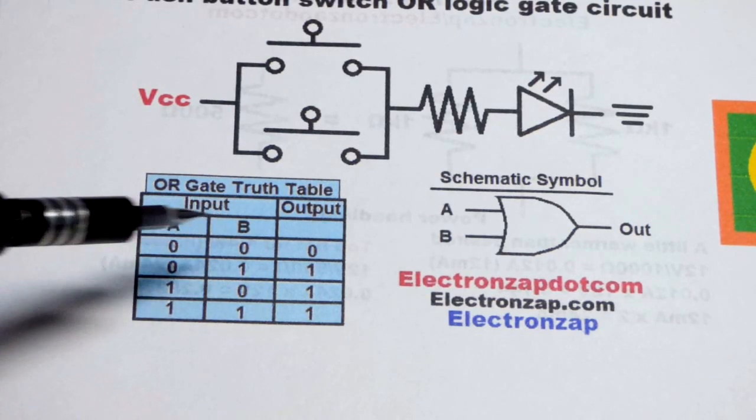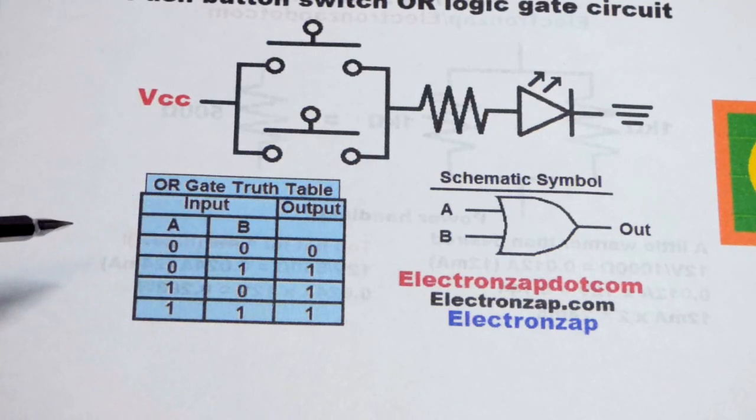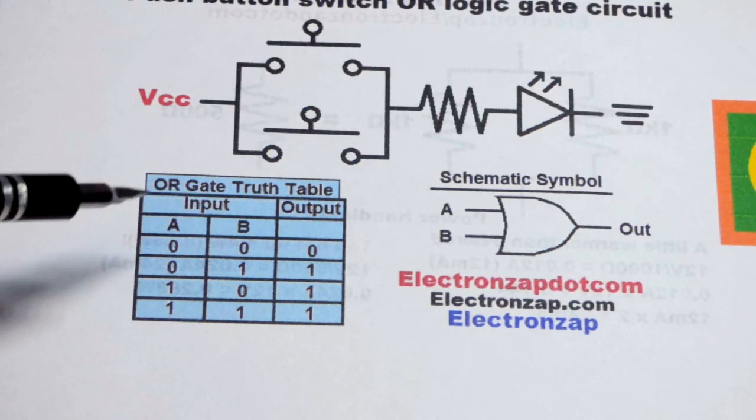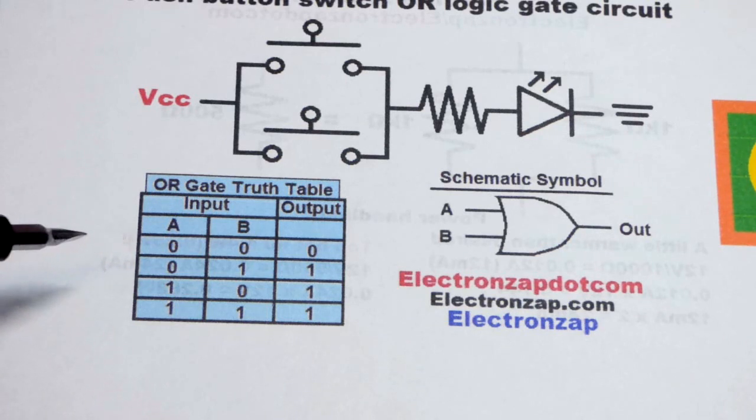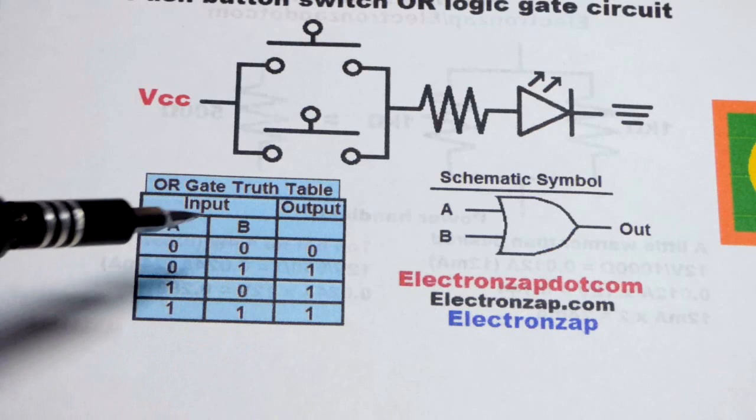If both inputs in this case are off, the output's off. There may be more than two inputs. There may be three or four or whatever. Same rule applies. If all of them are off, then the output's off.